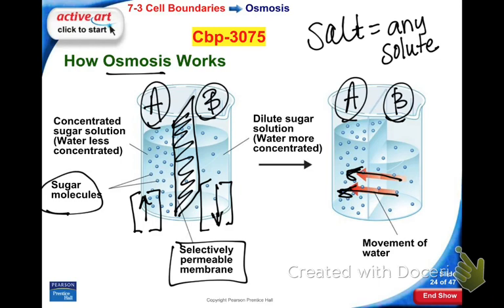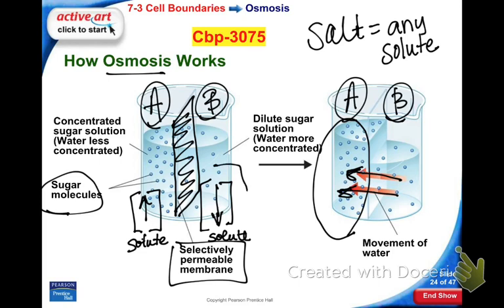Water is going to move from an area of higher concentration of water to an area of lower concentration of water. So the water is moving according to its concentration gradient, trying to dilute the sugar side. The concentrations here are referring to the solute. This is a very dilute solution on one side and more concentrated on the other.